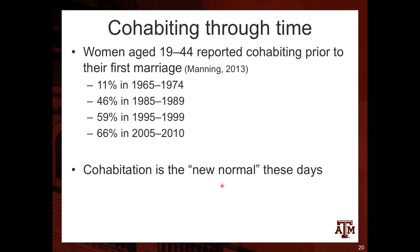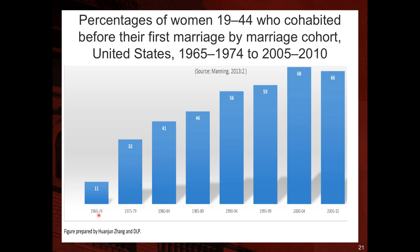Looking at this data graphically from 1965 to 2010: the percentage of women between 19 and 44 who cohabited before their first marriage by marriage cohort shows a steady increase from 11%, reaching 68% in the 2000–2004 cohort, then declining slightly to 66% — still much higher than in previous decades.